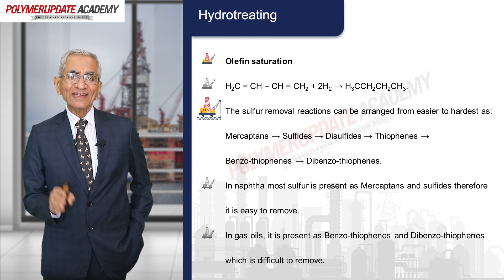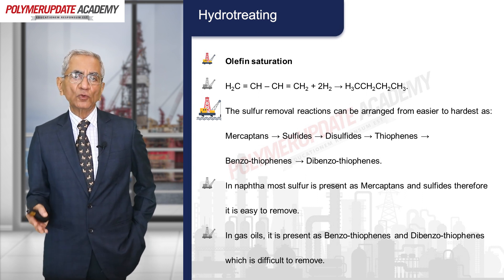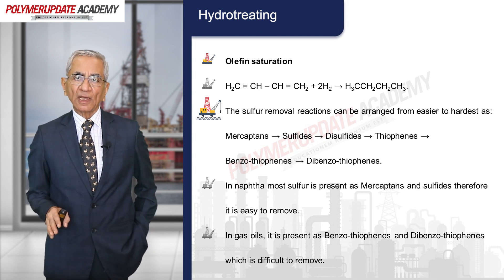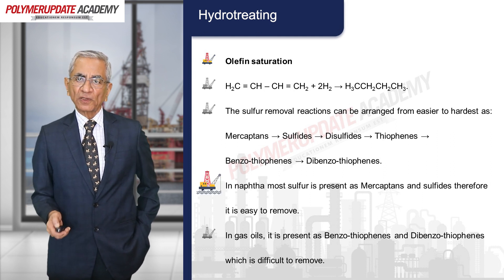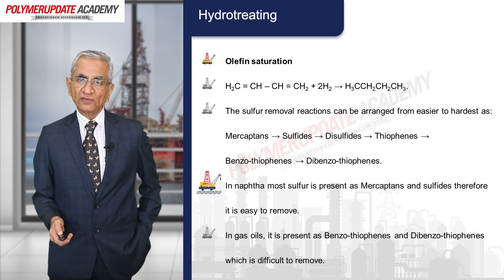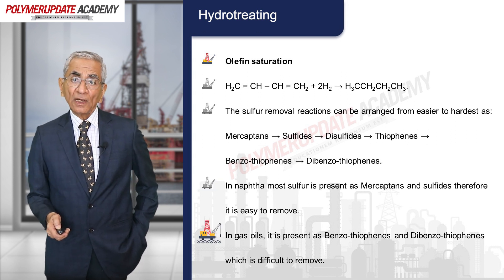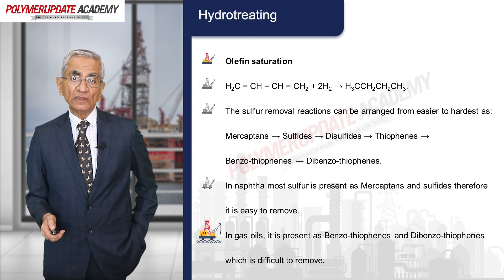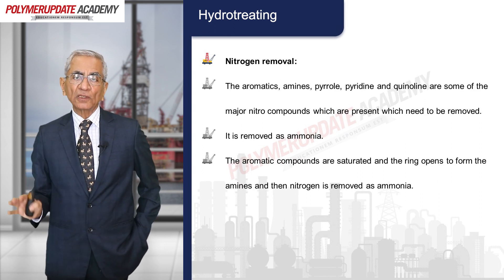The sulfur removal reactions can be arranged from easier to harder: mercaptans, sulfides, disulfides, thiophenes, benzothiophenes, and dibenzothiophenes. Mercaptans are easy to react while dibenzothiophenes are difficult. In naphtha, most sulfur is present as mercaptans and sulfides, making it fairly easy to remove. In gas oils, sulfur is present as benzothiophenes and dibenzothiophenes, requiring more severe conditions.